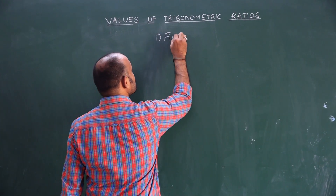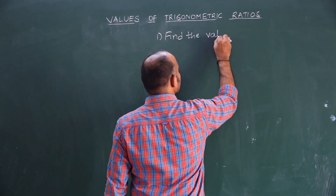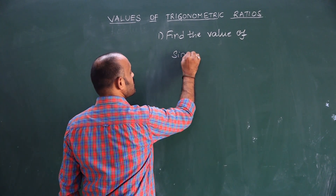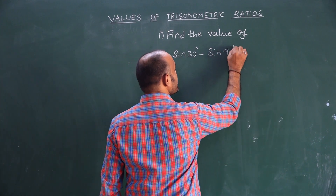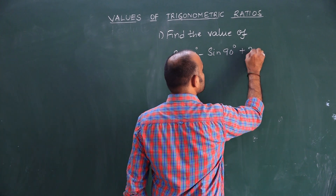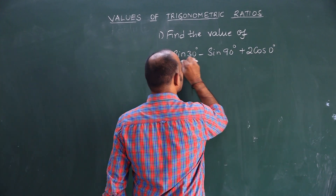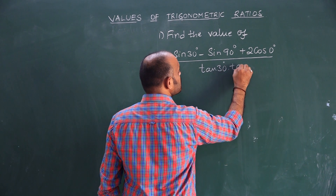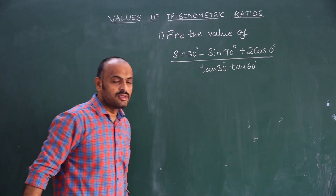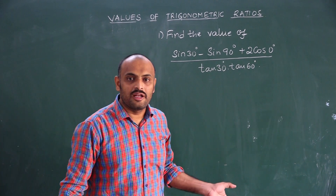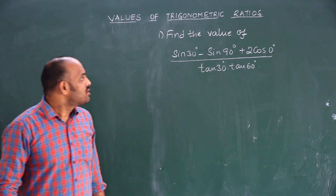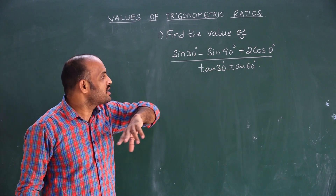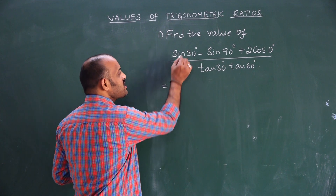Find the value of sin 30 degrees minus sin 90 degrees plus 2 cos 0 degrees, all divided by tan 30 degrees into tan 60 degrees. Here, how do we find the value? We need to substitute the values of sin 30 degrees, sin 90 degrees, cos 0 degrees, and so on.